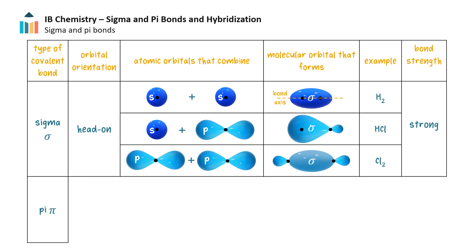A sigma bond is the strongest type of covalent bond. This head-on overlap of the orbitals allows for free rotation around the bond axis.